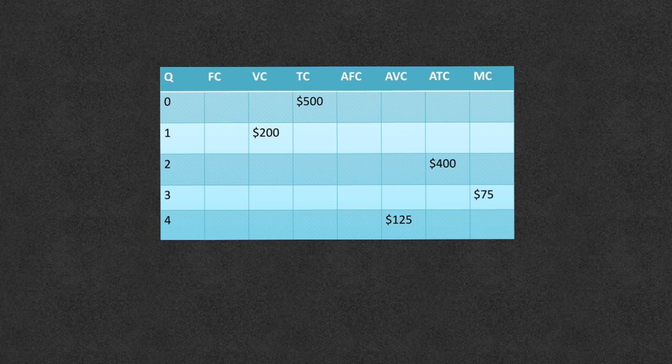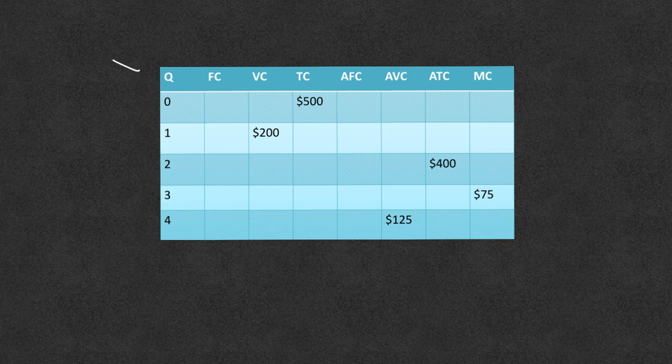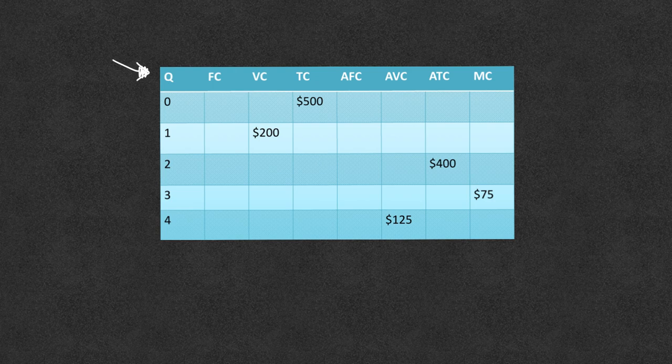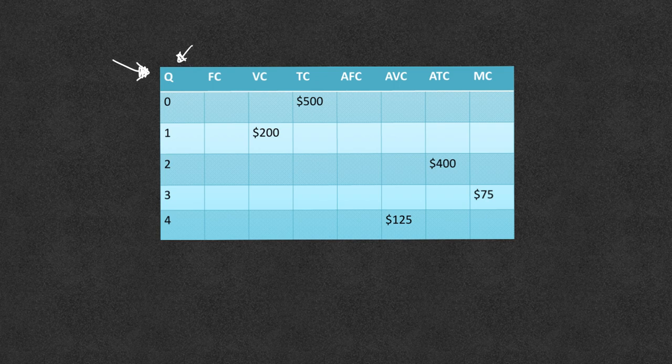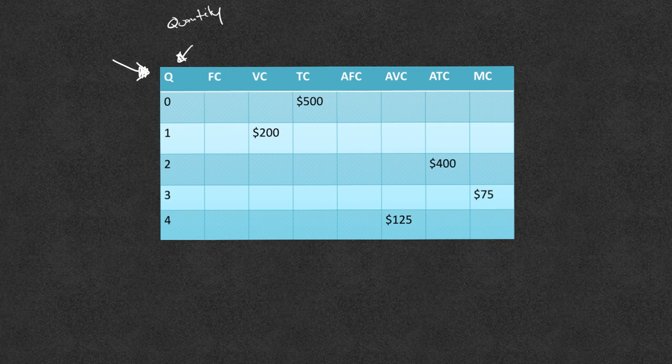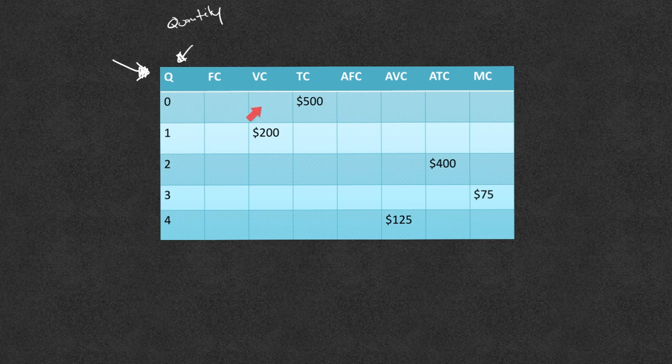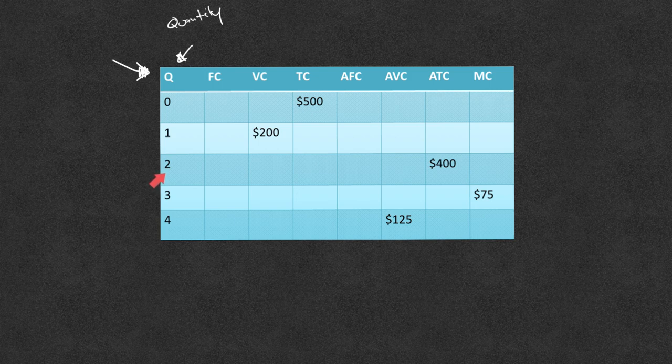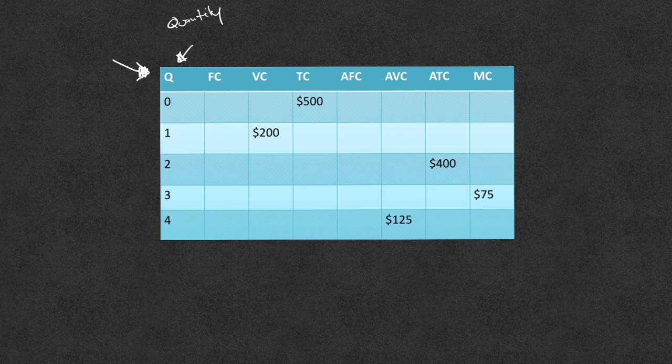Many intro to micro classes will have you fill out a cost table like the one you see here. This is one that I used in my classroom for many years and let's go over everything on the top first so that we know exactly what this is asking. The first thing we have over here on the left is the quantity. So this is usually the quantity that they would produce and going across would say okay if we produce zero quantity what are all the different costs. If we were to produce two quantity what would the different costs be. So let's go over each of these costs so we understand what they're asking.